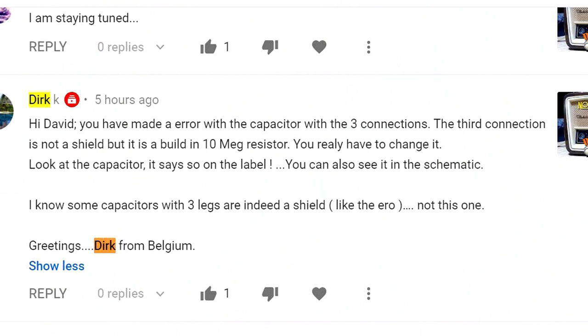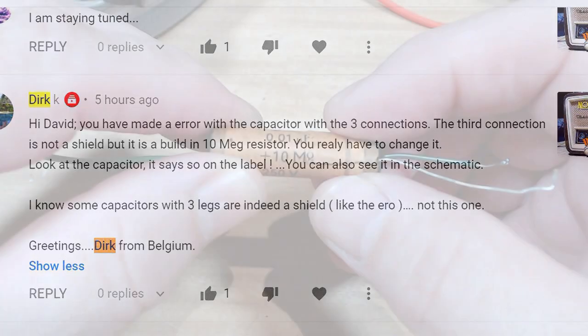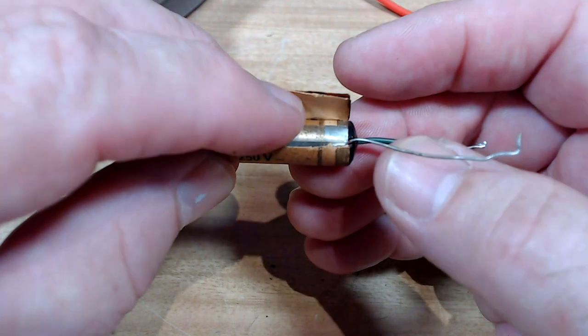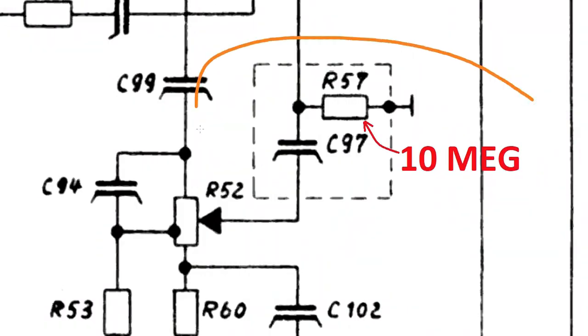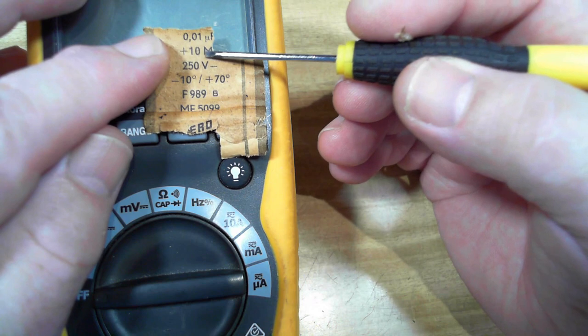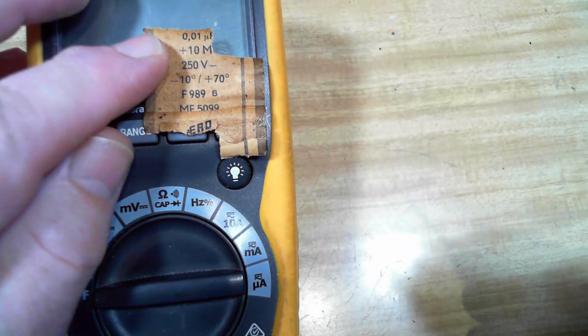I'm just going to break into this video. This video was finished and then a comment came through from Dirk in Belgium. I thank Dirk very much. He pointed out an error I made in part 1 and I'm just going to remedy that now. You'll recall that I had a 0.01 capacitor that had a shield around it. Now I thought it was just a capacitor with a shield. Dirk pointed out that it's actually got a resistor in it as well. There's the original capacitor 0.01 and it's got a plus 10 meg and I didn't see that.